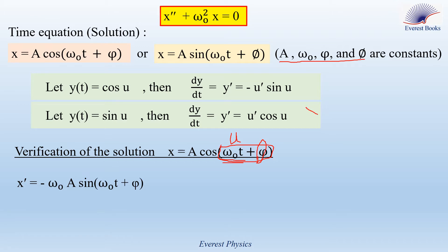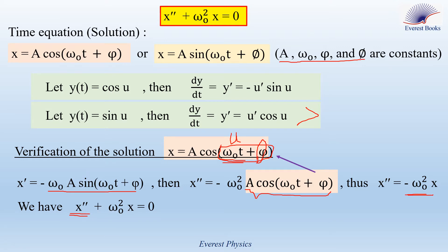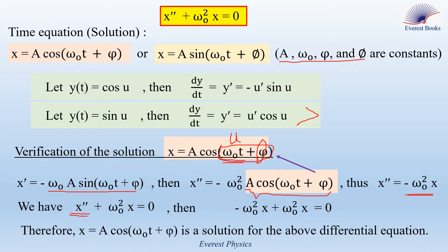Now, we will use the second math relation to differentiate this expression with respect to time. So x double prime equals minus omega 0 squared A cosine(omega 0 t + phi). But A cosine(omega 0 t + phi) equals x, so replacing it gives x double prime equals minus omega 0 squared x. This is our differential equation. So minus omega 0 squared x plus omega 0 squared x equals 0. Therefore, x equals A cosine(omega 0 t + phi) is a solution of the differential equation.